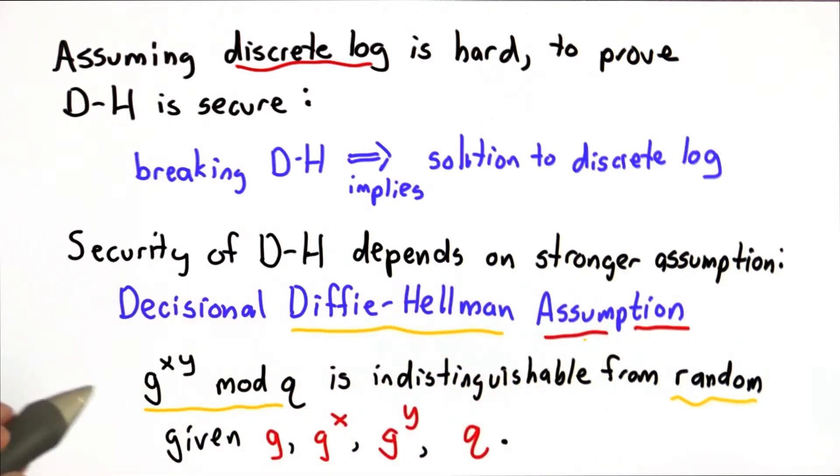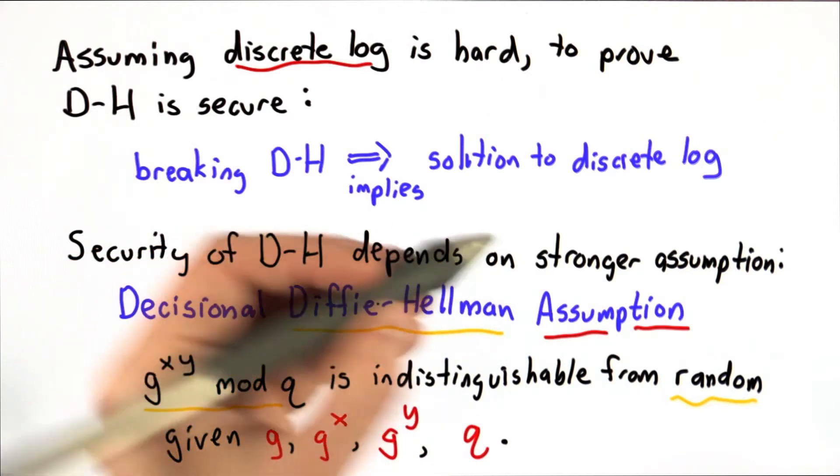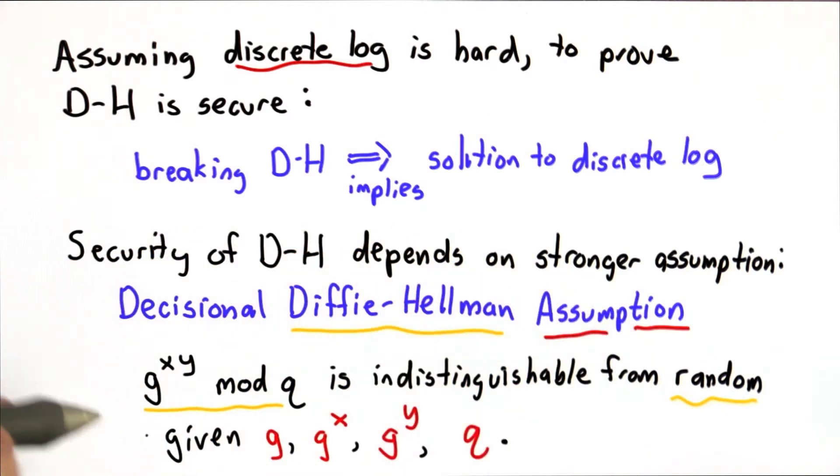So this is an assumption, and it's even worse than that. It's known that it's not true for certain values. We can show that it is distinguishable from random, so the security of the Diffie-Hellman protocol would follow from this assumption if we knew this assumption were true.